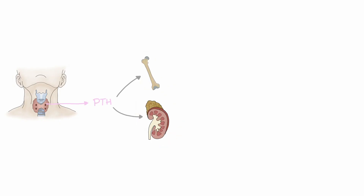PTH increases osteoclast activity and so liberates calcium from the bone into the blood. In the kidney, PTH has two effects.